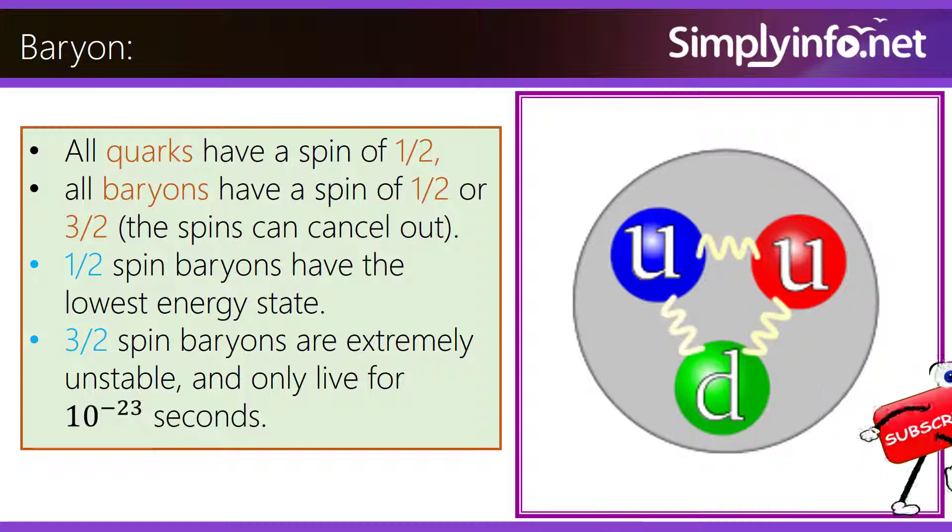1/2 spin baryons have the lowest energy state. 3/2 spin baryons are extremely unstable and only live for 10^-23 seconds.